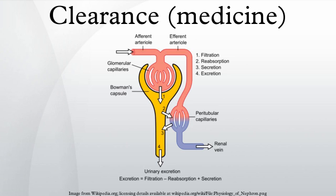From the above definitions, it follows that dC/dt is the first derivative of concentration with respect to time — the change in concentration with time. It is derived from a mass balance. Clearance of a substance is sometimes expressed as the inverse of the time constant that describes its removal rate from the body divided by its volume of distribution.